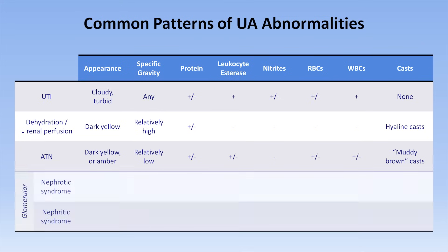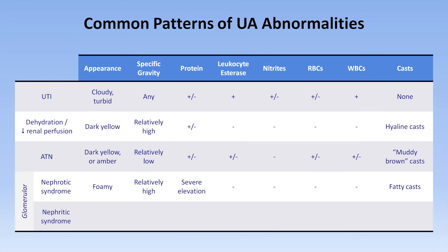There are two categories of glomerular disease. In nephrotic syndrome, the urine can look foamy on account of proteins decreasing the urine's surface tension. Severe proteinuria also leads to a very high specific gravity. Leukocyte esterase, nitrites, RBCs, and WBCs are all absent, and the urine may contain fatty casts. Finally, in nephritic syndrome, the urine can look red or brown with a relatively high specific gravity. Protein may be mildly or moderately elevated. Leukocyte esterase may or may not be present. RBCs are almost always present, and dysmorphic morphology is strongly suggestive of this diagnosis as opposed to other etiologies of hematuria. WBCs may or may not be present, and the patient may have RBC casts on microscopy.